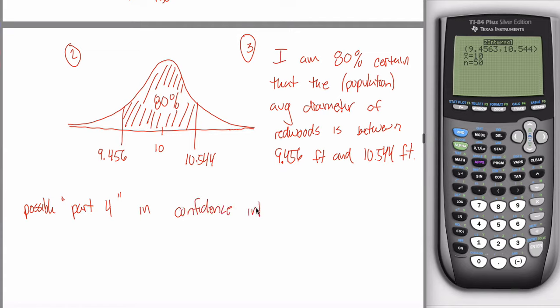On your quiz this week and on your midterm, when you see confidence intervals, it'll have this part four in there. It'll be one, two, and three exactly like you saw in the previous videos, and then a part four. For most people, part four is the hardest one, which is why it gets its own video.